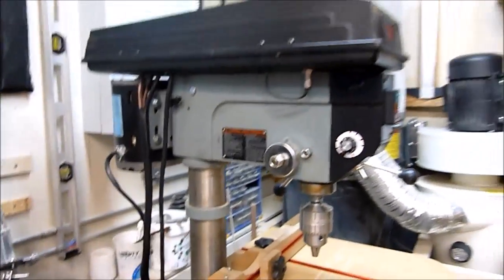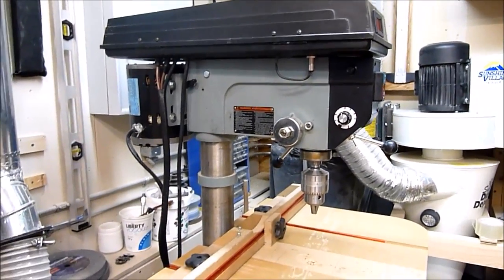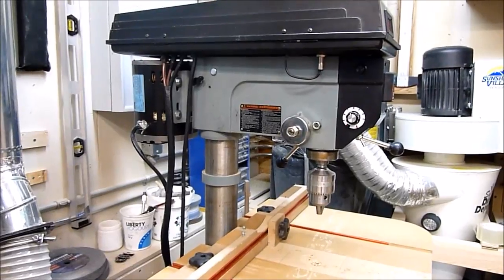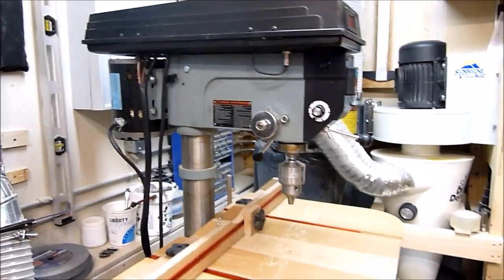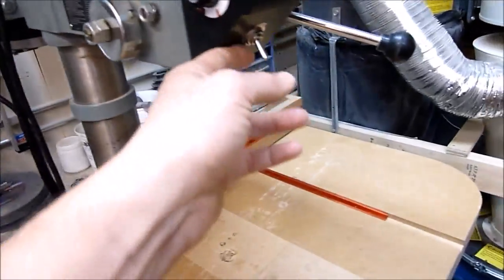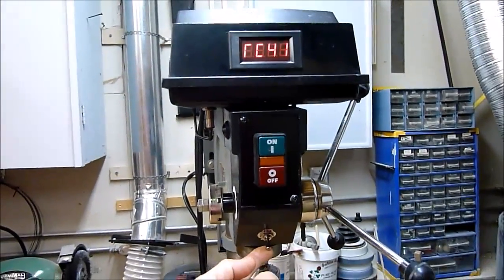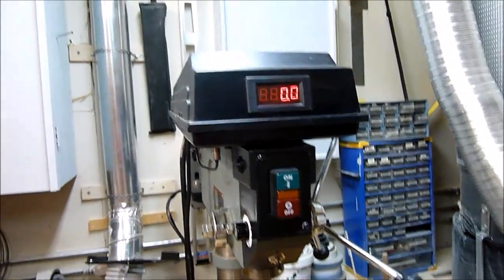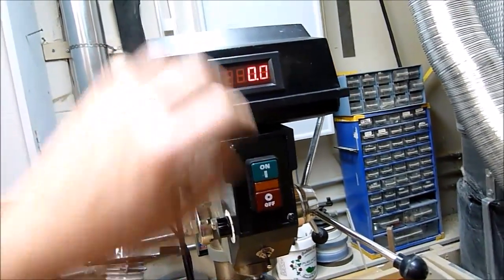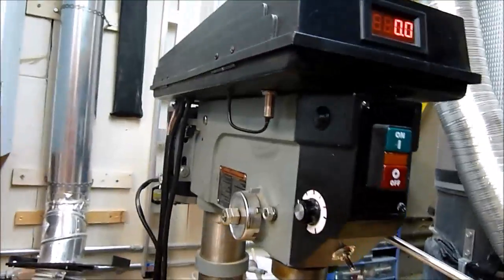The VFD is mounted down below, screwed up against the cabinet. It has a 115 volt single phase input which I run through a main master power switch here on the bottom. When I turn that on, that energizes the VFD and the VFD supplies power to this tachometer that I've installed.